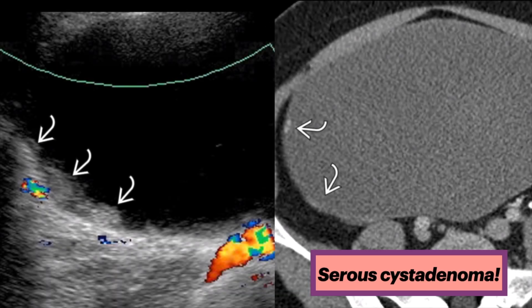In this separate case, here is an ultrasound showing subtle nodularity along the right lateral margin of the wall. Corresponding contrast-enhanced CT shows subtle enhancing nodules at the site of the sonographic finding. These findings correlated with areas of focal borderline neoplasm.